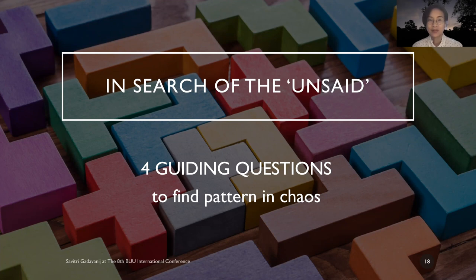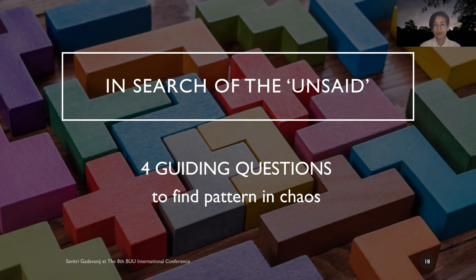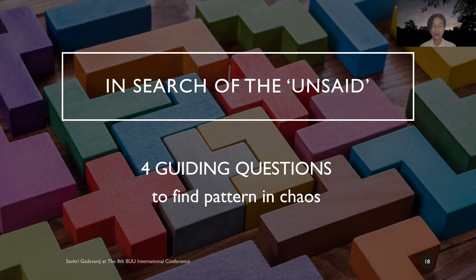Because there is a lot more information communicated than just what is said, we need to search for the unsaid and how the unsaid is conveyed in communication. In order to do so, I have four guiding questions for you. These four guiding questions will help you find pattern in chaos — there are so many factors involved, and with these questions you can tease out the information worth analyzing.